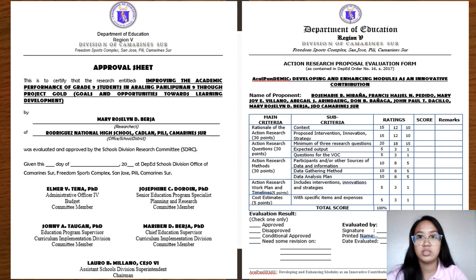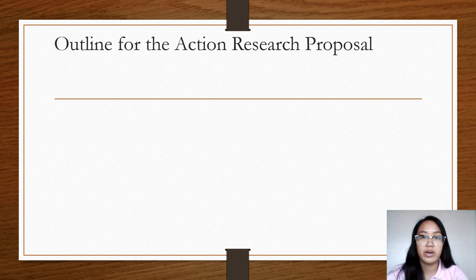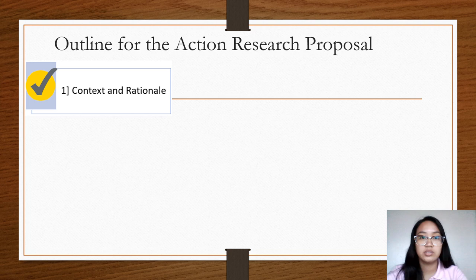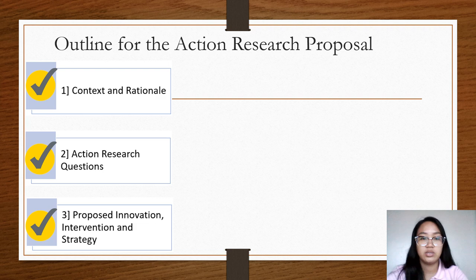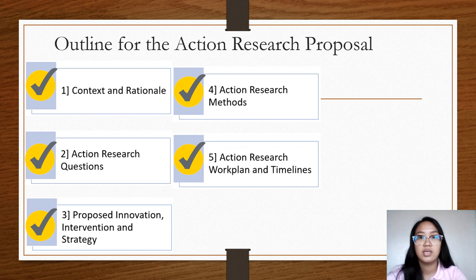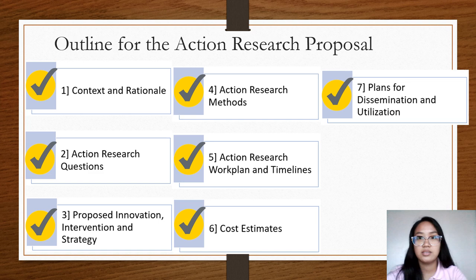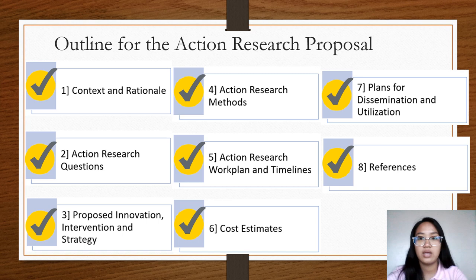These are the different parts of an Action Research Proposal: context and rationale, action research questions, proposed innovation, intervention and strategy, action research methods, action research work plan and timelines, cost estimates, plans for dissemination and utilization, and lastly, references.